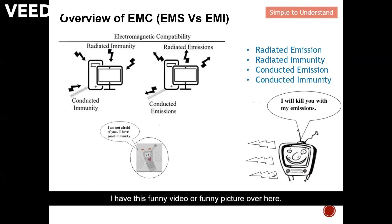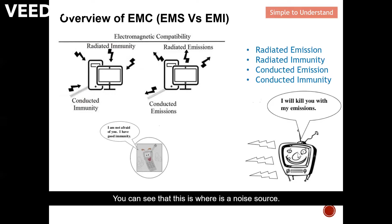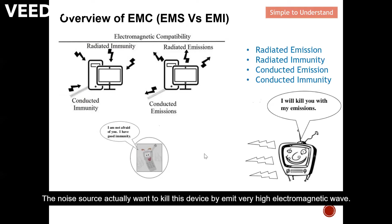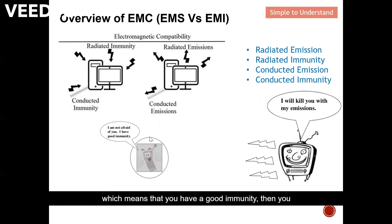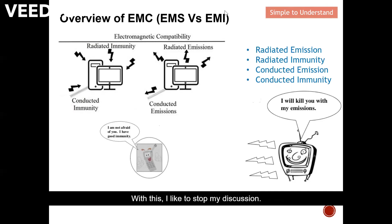Here is a diagram illustrating the concept: the noise source is trying to affect your device by emitting a very high electromagnetic wave. If you have done a proper design with good immunity, your device will not be affected by the high radiated field. With that, I'd like to stop my discussion — please help by liking and subscribing. Thank you.